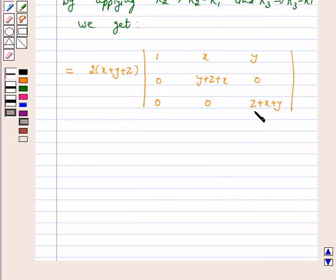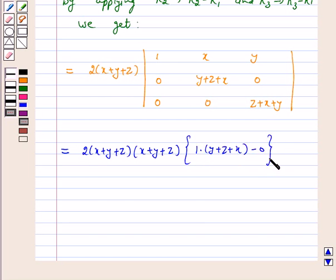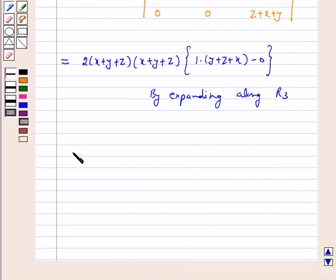Now expanding along R3, we get our left hand side is equal to 2 times x plus y plus z times x plus y plus z times 1 into y plus z plus x minus 0, which equals 2 times x plus y plus z whole square into x plus y plus z, which equals 2 times x plus y plus z whole cube.